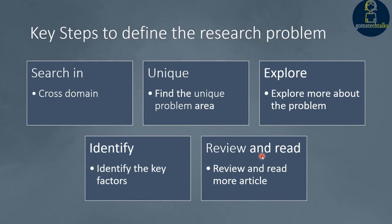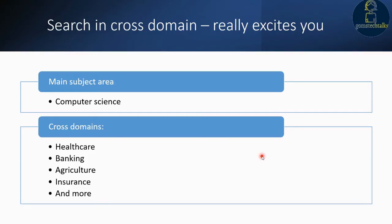The very first step is to search in cross domains. If you are from computer science, you should not always look for computer science-based problems. You have to search across domains like healthcare, where you can implement your computer knowledge, or in banking, insurance, or agriculture.